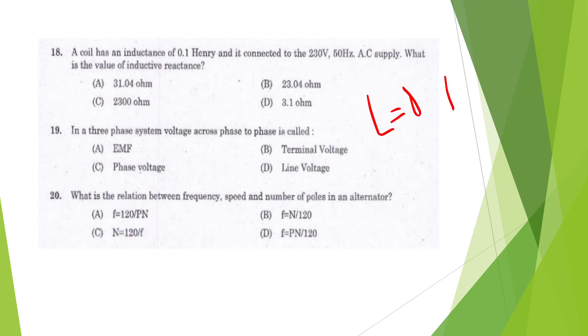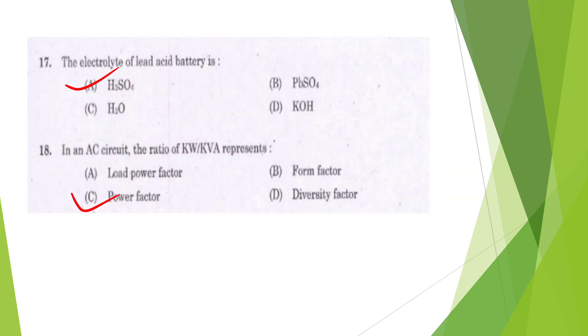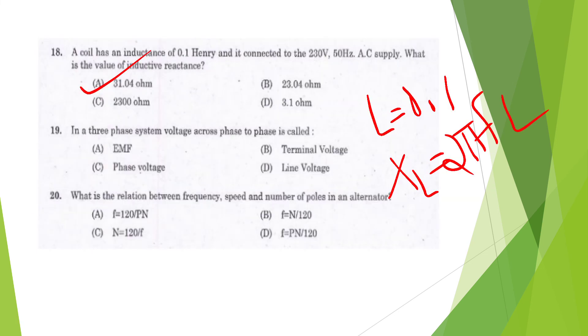Question 20: A coil has inductance of 0.1 henry connected to 230 volt, 50 hertz AC supply. What is the value of inductive reactance? Inductive reactance XL formula is 2 pi F L. Solve it, the answer is 31.04 ohm. Question 21: Three phase system voltage across phase to phase is called EMF, terminal voltage, phase voltage, or line voltage? Option D, line voltage.